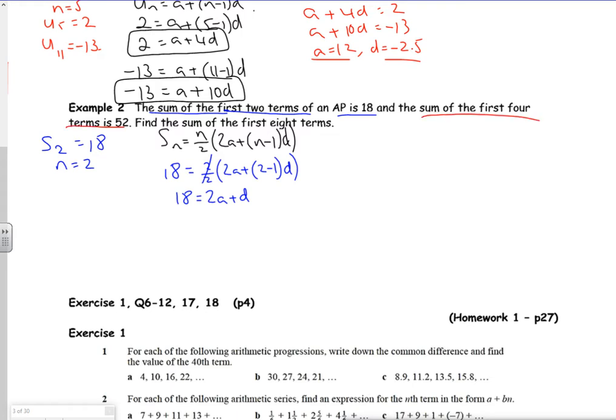The other bit of information I've got is the sum of the first four terms is 52, so S₄ equals 52 when n is 4. So 52 equals 4 over 2 times 2a plus 4 minus 1 times d. Well actually, let's have a think before we go any further.